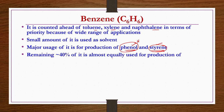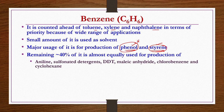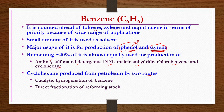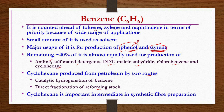About 40 percent of benzene is used for production of different types of chemicals like aniline, sulfonated detergents, DDT, maleic anhydride, chlorobenzene, and cyclohexane. Cyclohexane is produced from petroleum by two routes: catalytic hydrogenation of benzene and direct fractionation of reforming stocks. Cyclohexane is one of the important intermediates in synthetic fiber preparation.